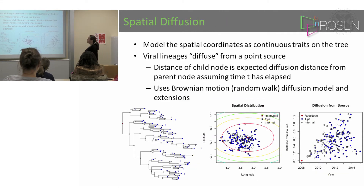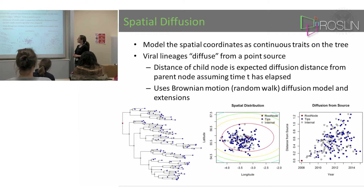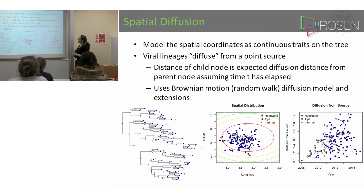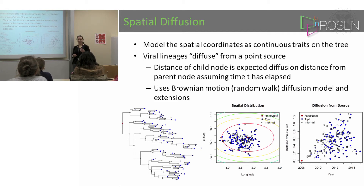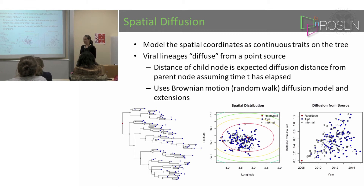So what can we do? Well, in that case we can use a spatial diffusion model. Instead of discrete traits, we're going to model the spatial coordinates as continuous traits, and we're going to imagine that the viruses are going to diffuse from a point source. What you're assuming here is that the distance of the child node is some diffusion path from the ancestral node, assuming that you've allowed a certain amount of time to elapse.